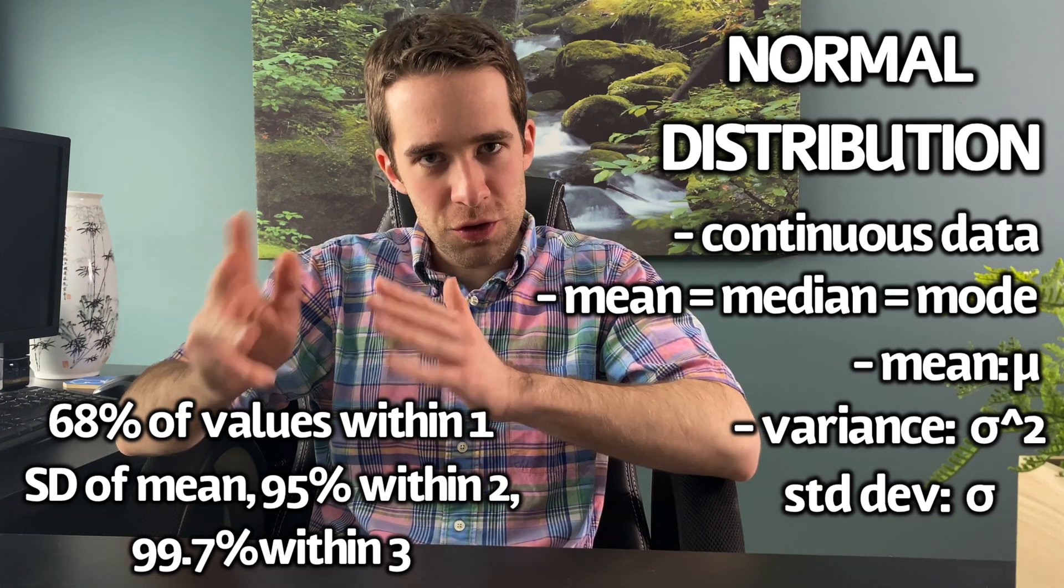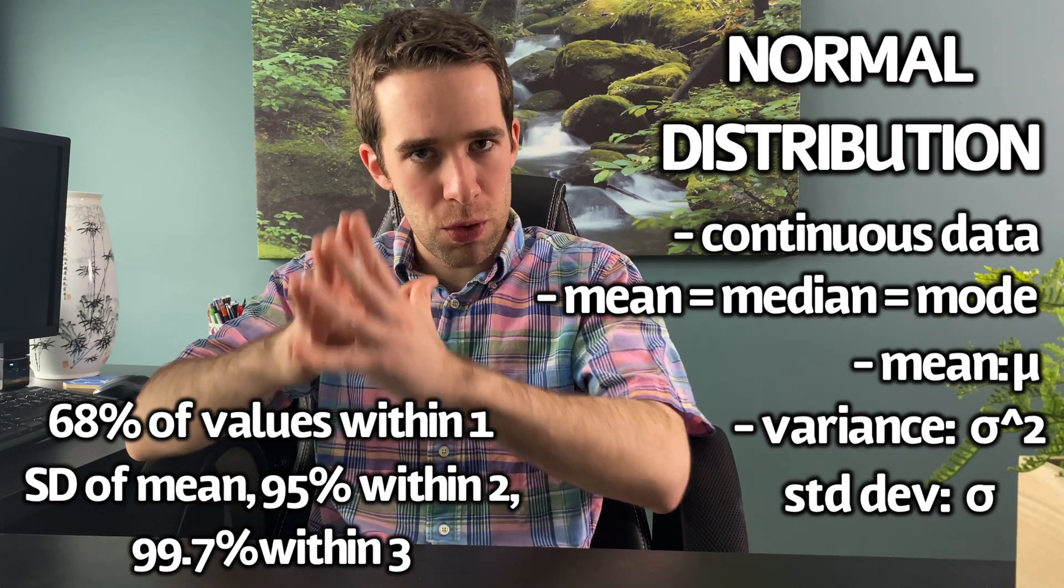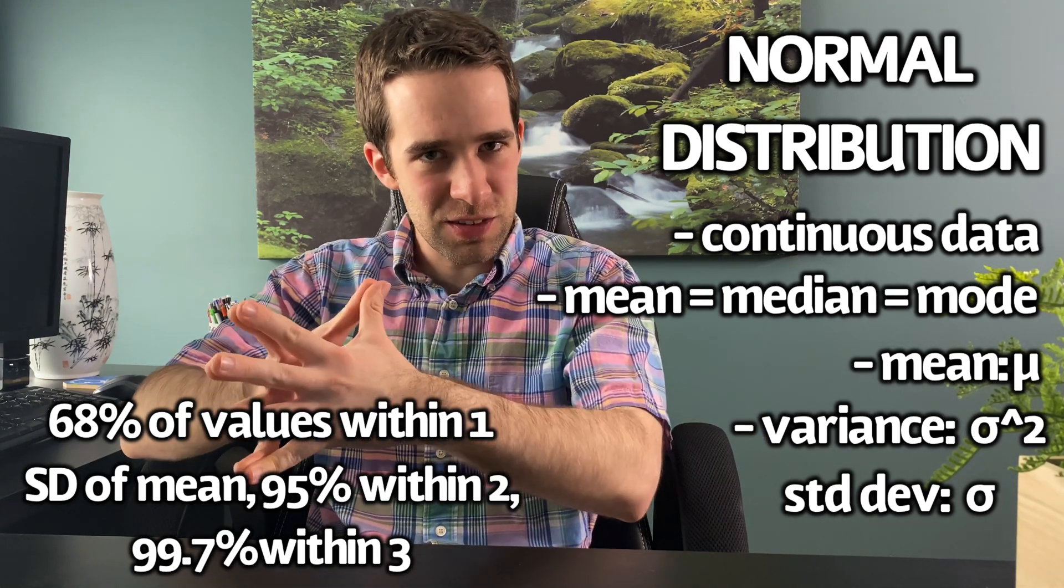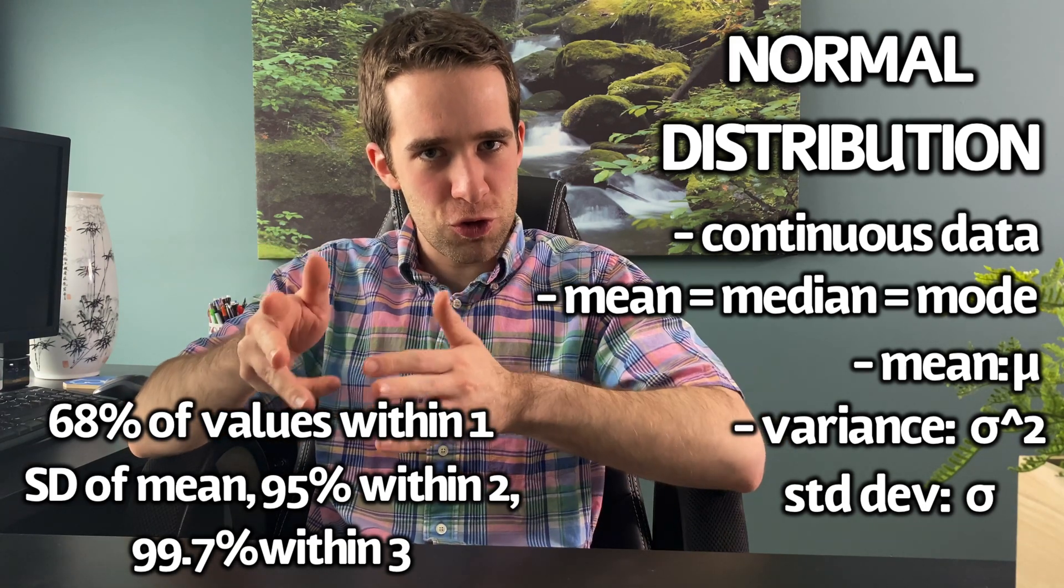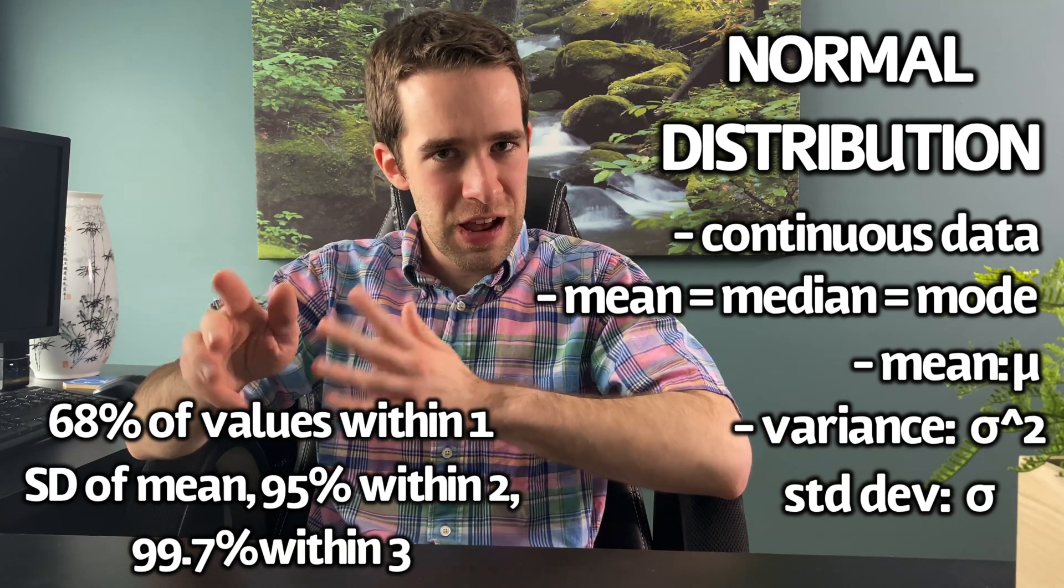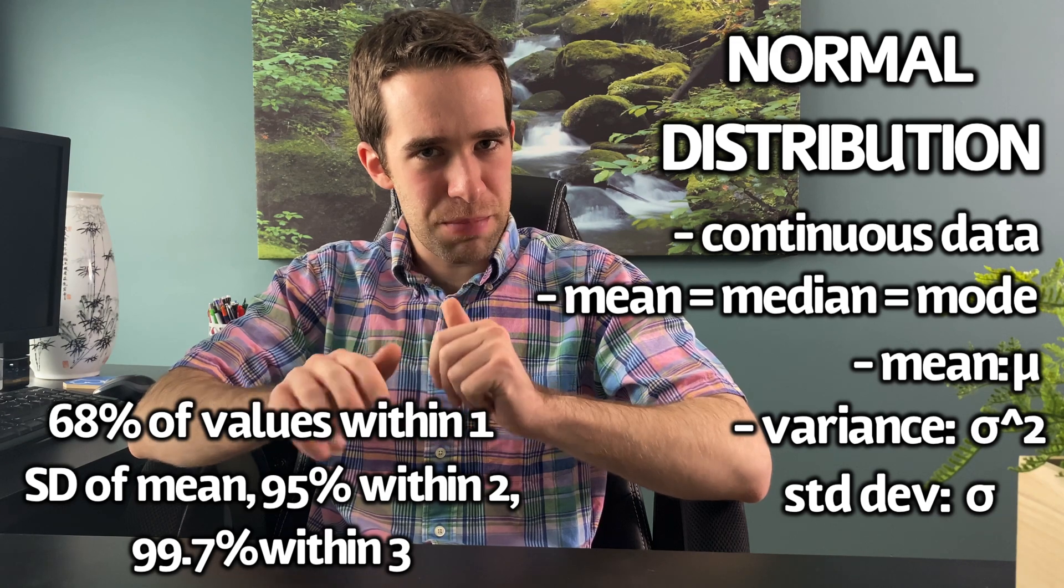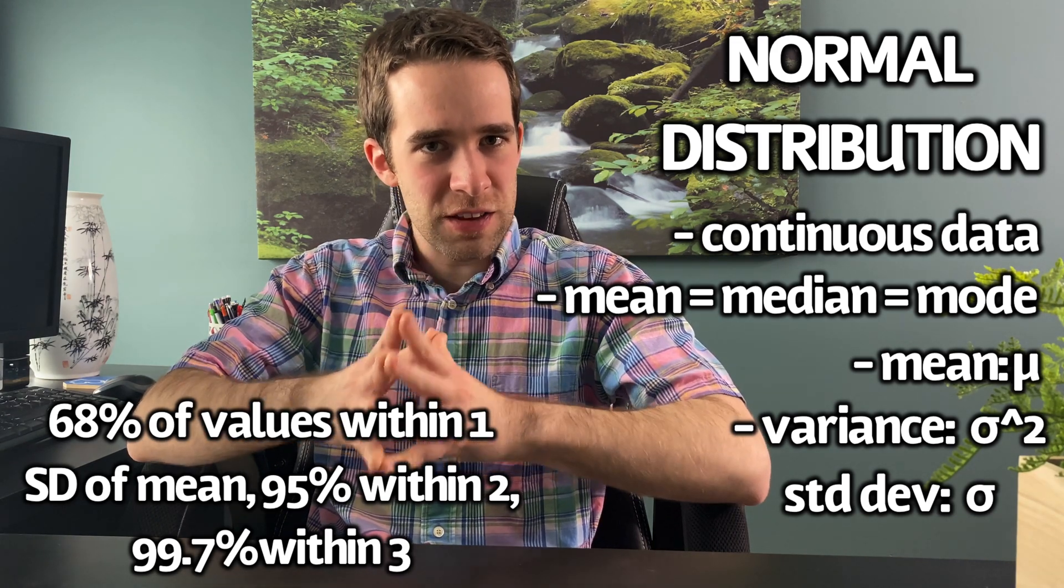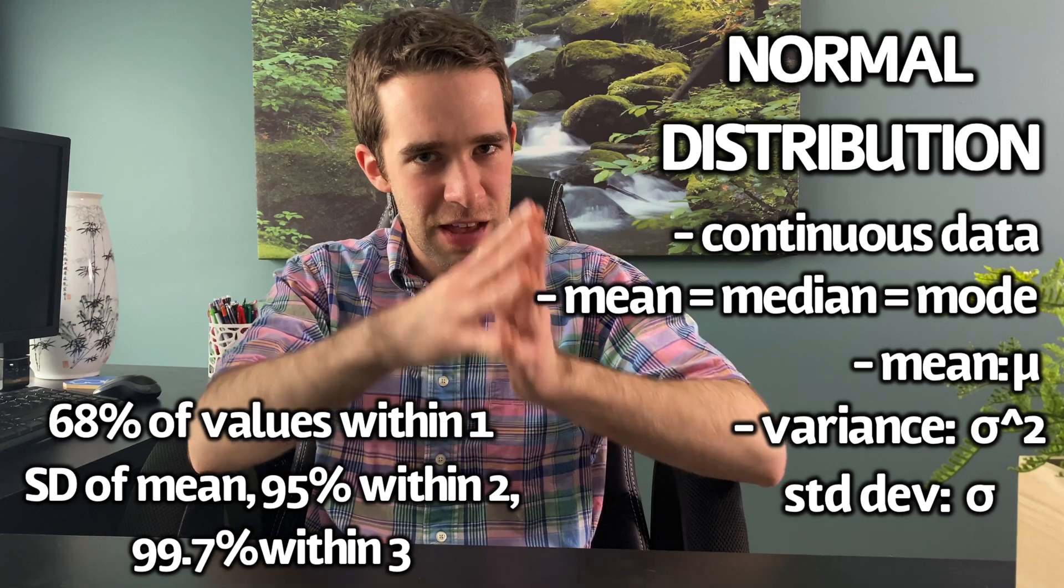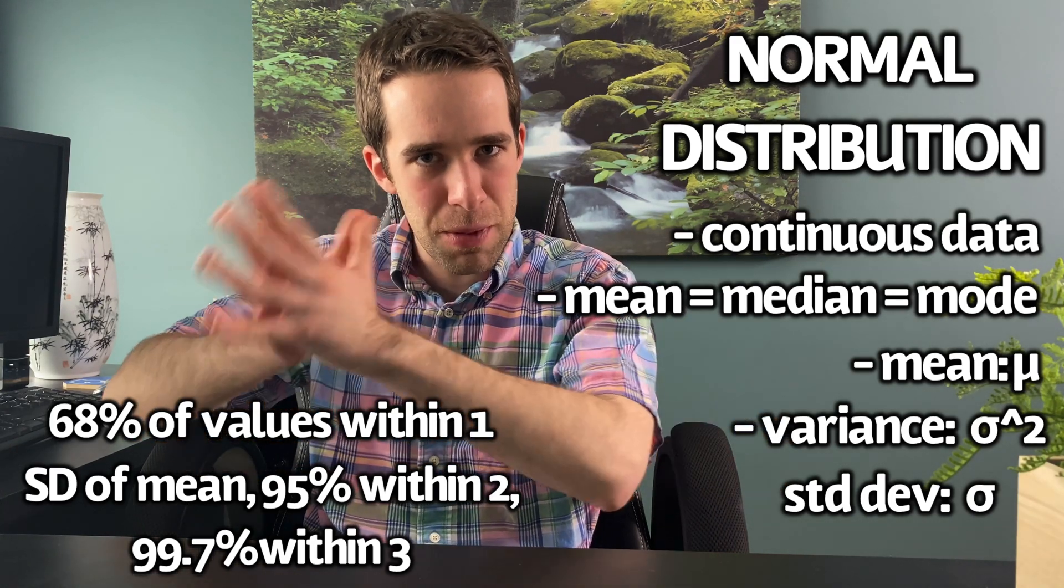Also associated with the normal distribution is one super important metric, and that's known as the z-score, also sometimes referred to as the standardized score. Now these sound super fancy, but they're not. A z-score is just the number of standard deviations that a measurement is away from the mean.